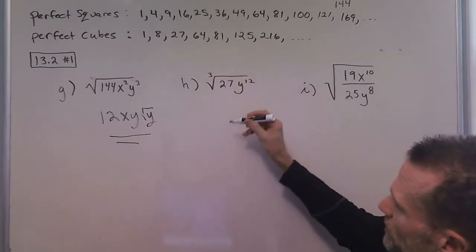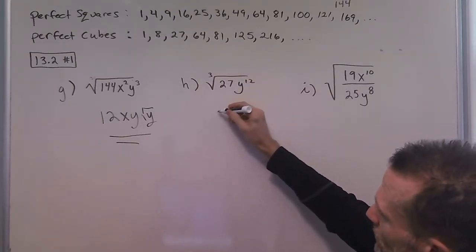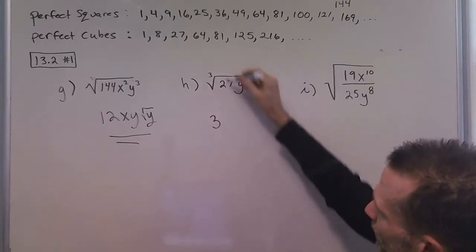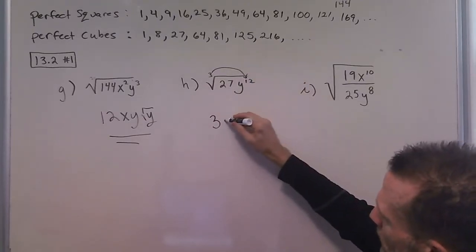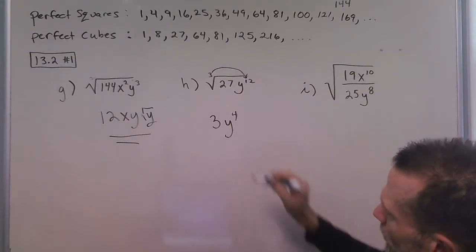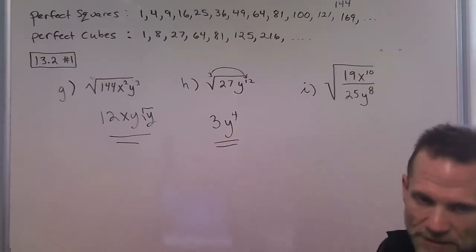Next, we're going to do the cube root of 27, which is on our list. So the cube root of 27 is 3, and then 3 goes into 12 four times, so we have 3y to the fourth. And that one simplifies nicely, nothing left in the radical sign.